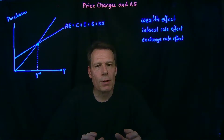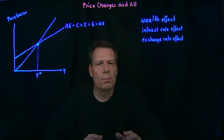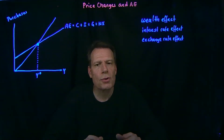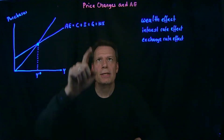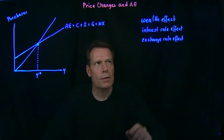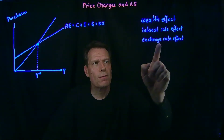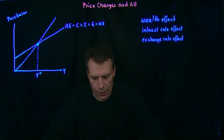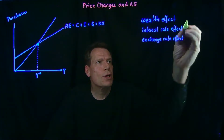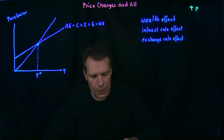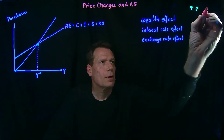But there's one thing that we've held constant in this graph, and that is prices. We've simply assumed that prices are fixed. So now we want to ask what's going to happen to aggregate expenditures as prices change. We're going to find that there are three effects we need to keep track of: the wealth effect, the interest rate effect, and the exchange rate effect. For each of those, we're going to ask what happens if the general price level increases, and what happens if it decreases.